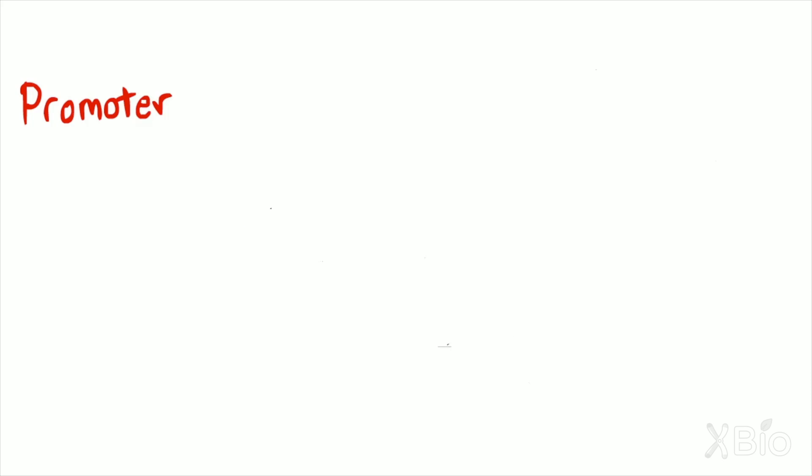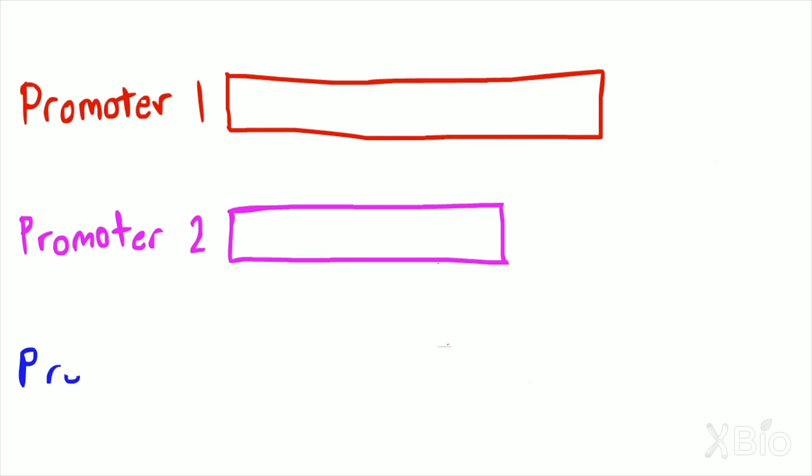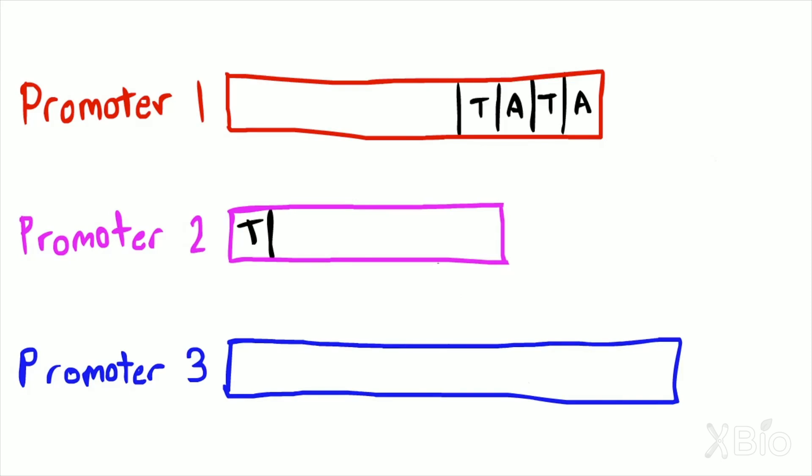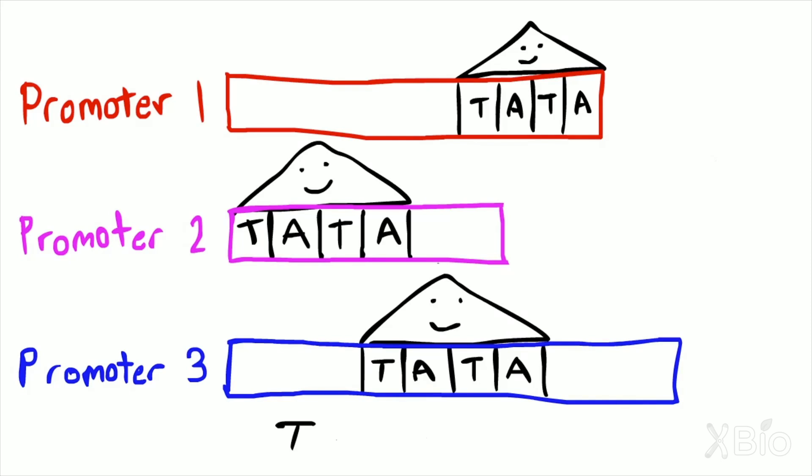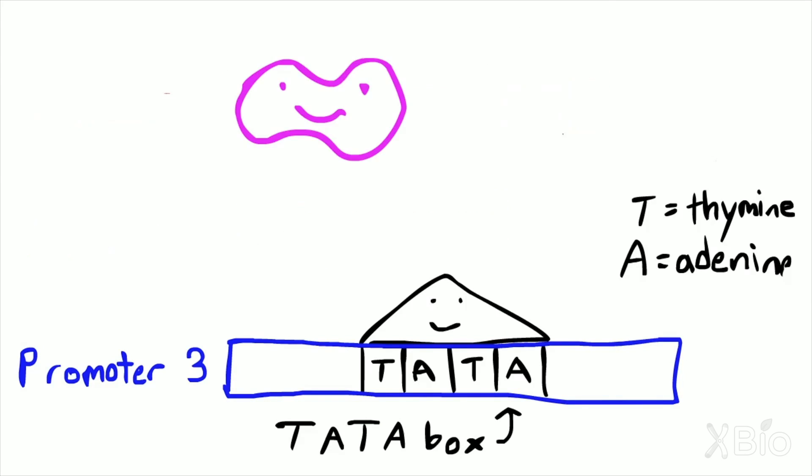Although promoters for different genes aren't exactly the same, they do share some common features. For instance, a good fraction of promoters contain what is called the TATA box, a sequence characterized by alternating adenines and thymines.